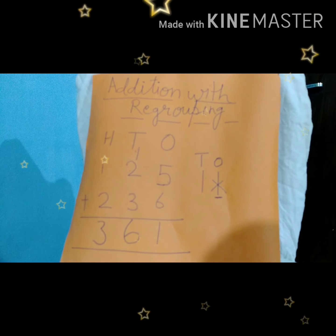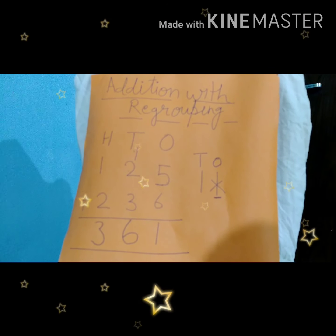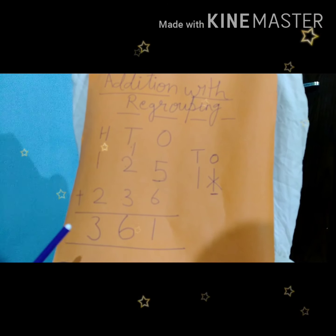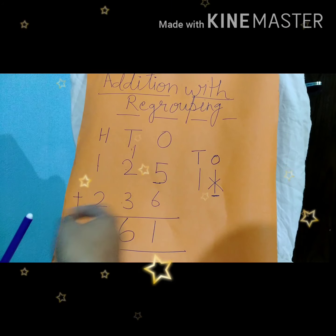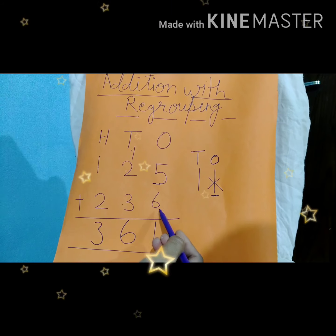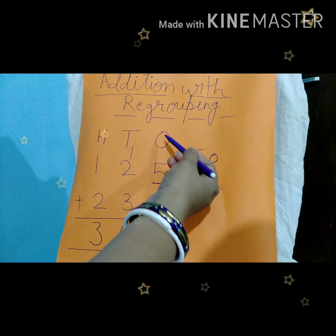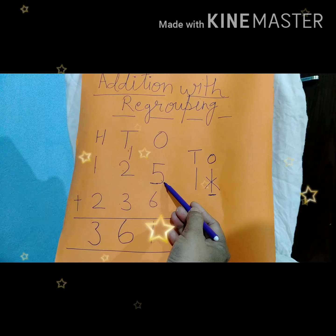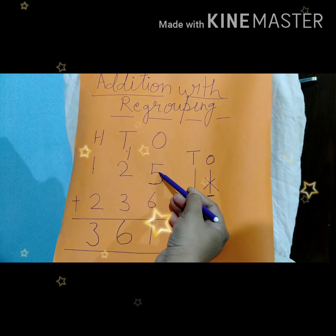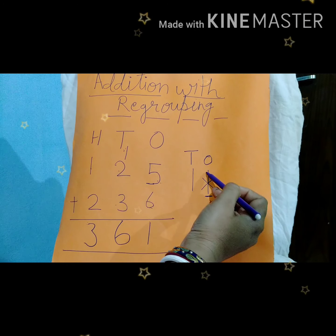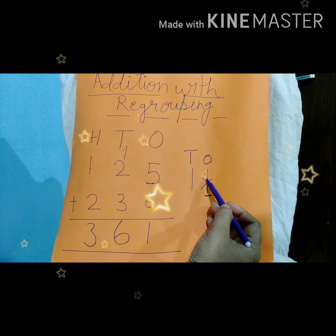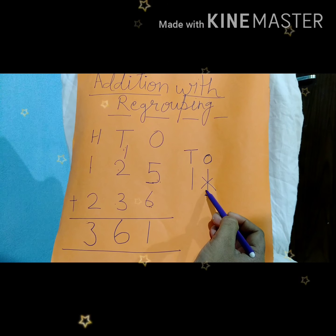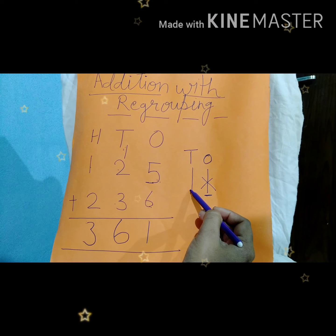Children, you all understood simple addition. Now we will add with regrouping. How we can do this? See in this example you have numbers 125 plus 236. First we will add the numbers which are in 1's place. So in 1's place here we have 5 plus 6. 5 plus 6 is equal to 11. In 11 again we have 2 digits. 1 is in 1's place and another one is in 10's place.